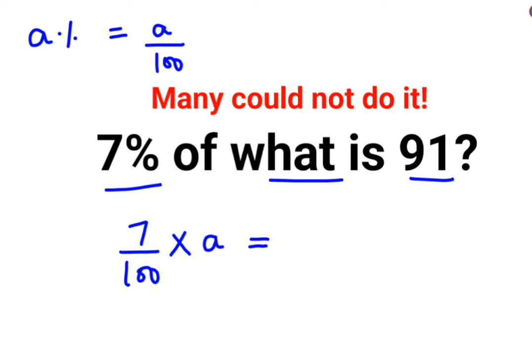Please understand, of always means multiplication in mathematics. Is always means equal to. So this is 91.